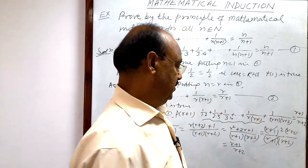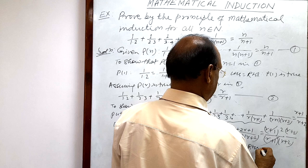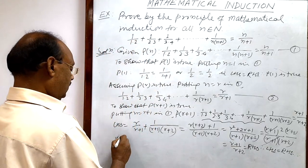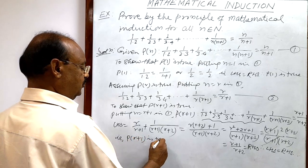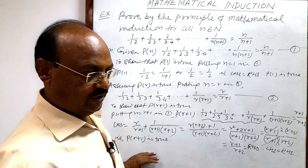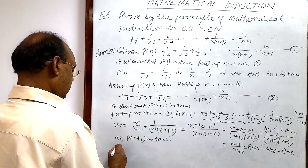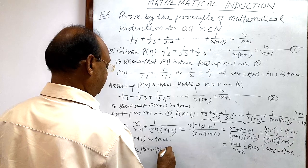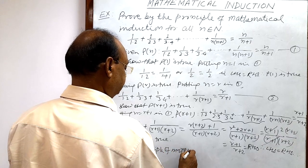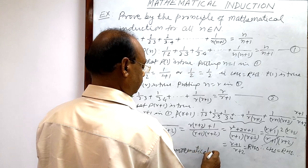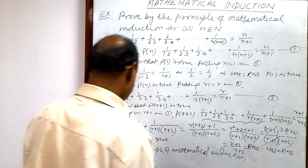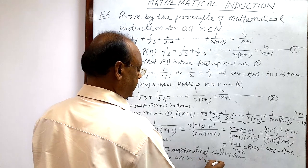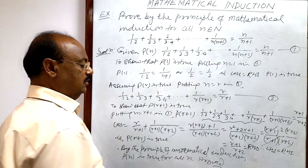This equals (r+1)/(r+2), which is exactly the right hand side we needed to prove. Therefore LHS = RHS, which means P(r+1) is true. By the principle of mathematical induction, the statement P(n) is true for all n.